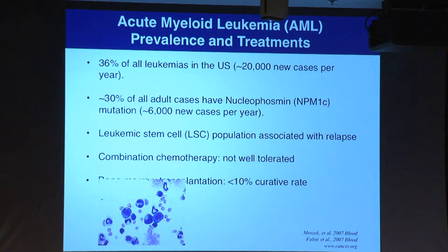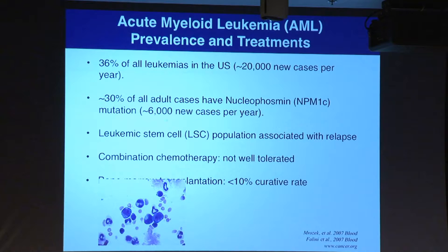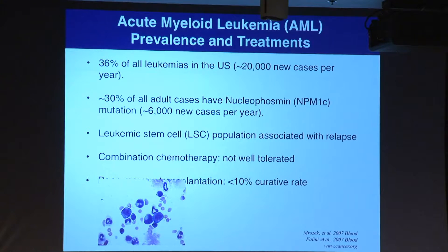Another major aspect of leukemia is leukemia stem cells, which arise by mutation in early progenitors and give rise to more mature tumor cells. The leukemia stem cells are hard to treat—chemotherapy does not work well, and even bone marrow transplant only works for around 10% of patients.